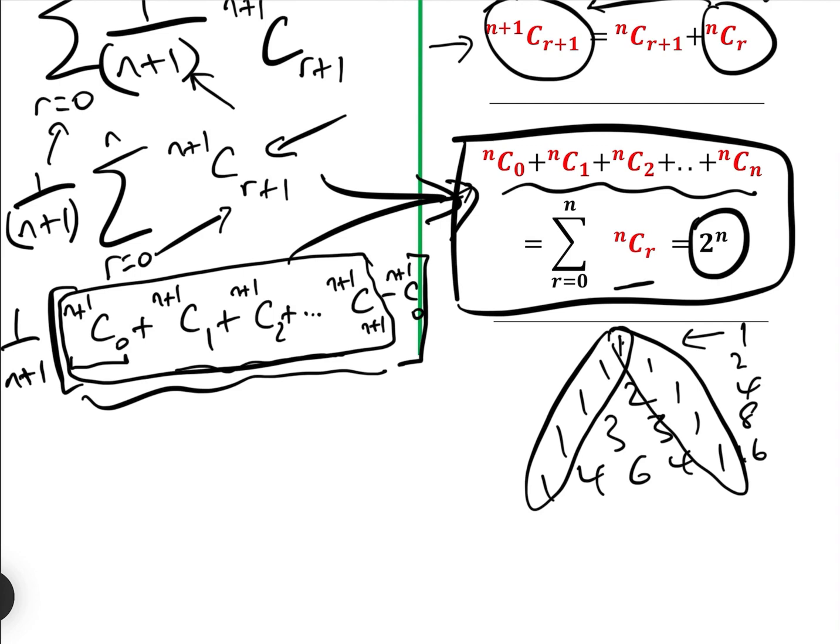And so the sum of this bit here, which is n plus 1 choose 0 add n plus 1 choose 1, it's got all the terms all the way to n plus 1 choose n plus 1, is simply 2 to the n plus 1.